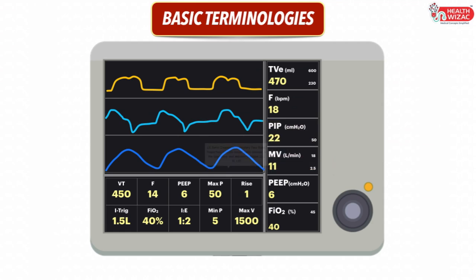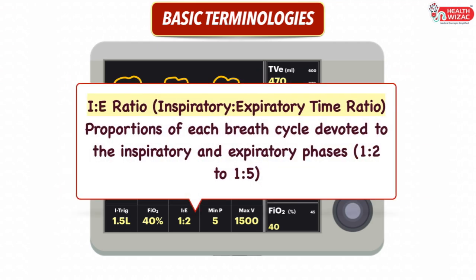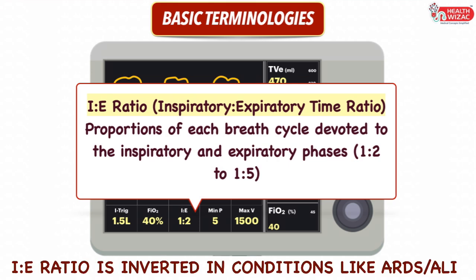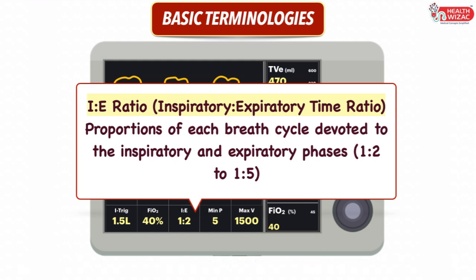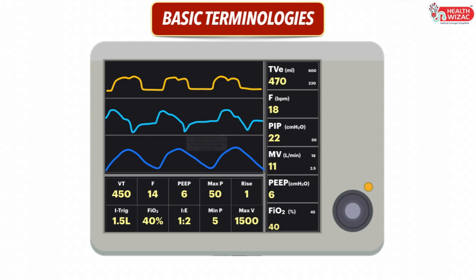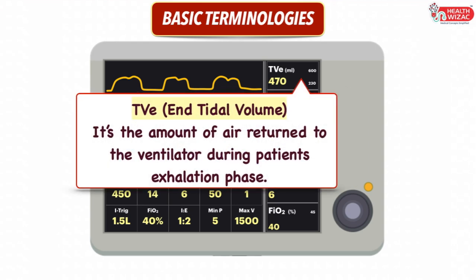Next is the I:E ratio, or Inspiratory to Expiratory time ratio. It is the proportion of each breath cycle devoted to the inspiratory and expiratory phases. It is usually set between 1:2 to 1:5, but this ratio may be inverted in specific conditions like ARDS, where inverse ratio ventilation is used — such as 2:1 — depending upon the condition of the patient.